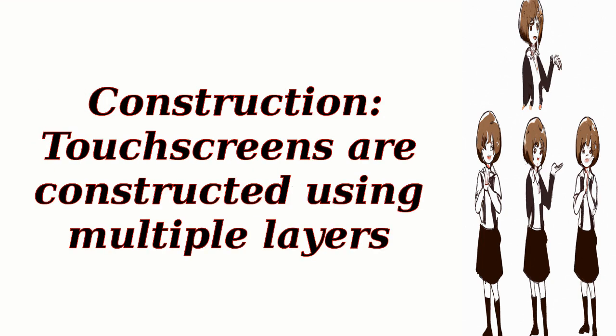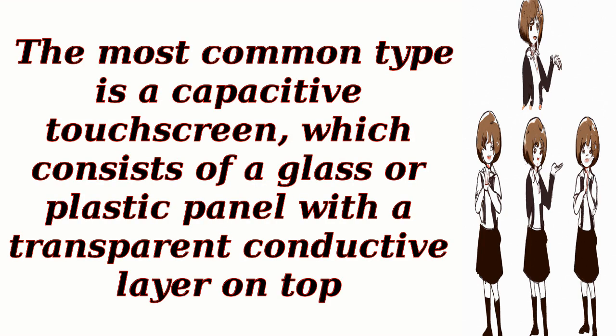Construction: touchscreens are constructed using multiple layers. The most common type is a capacitive touchscreen, which consists of a glass or plastic panel with a transparent conductive layer on top.